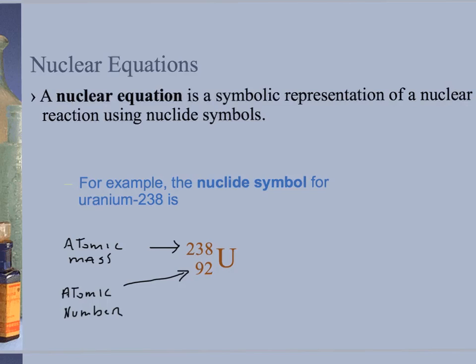When we look at a nuclide symbol, for example uranium-238, the 238 is written at top, the 92 is written below. The 238 is the atomic mass, the 92 is the atomic number.